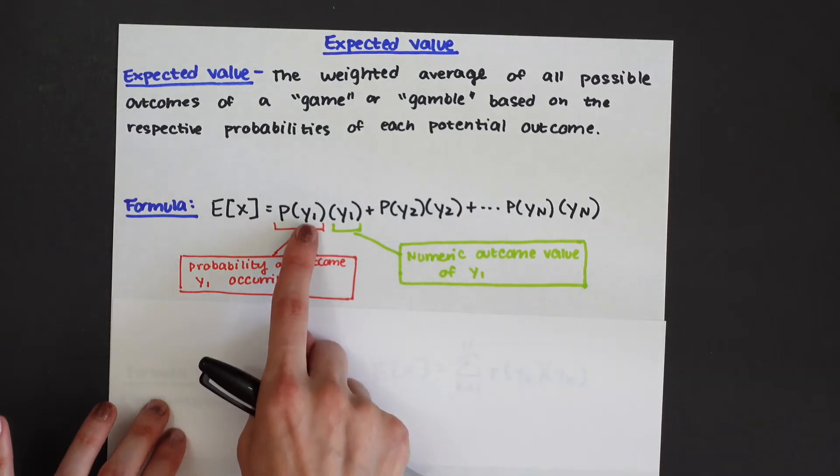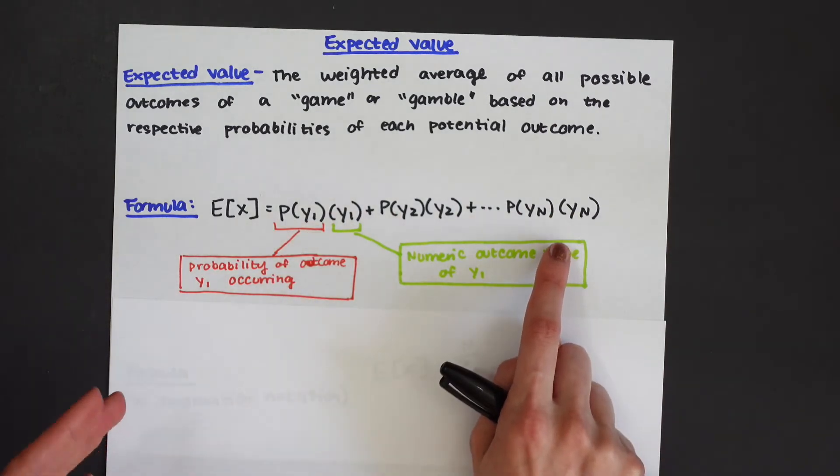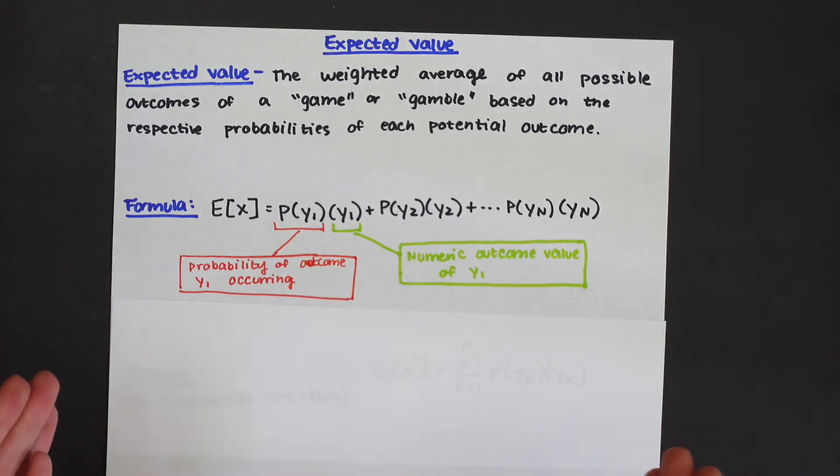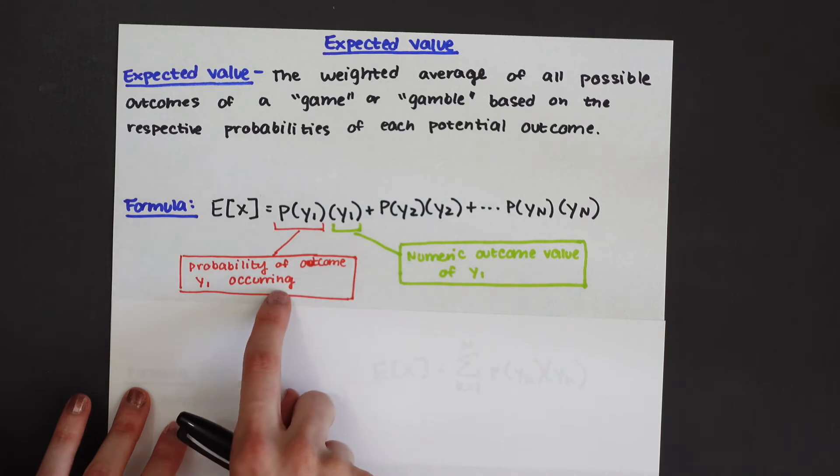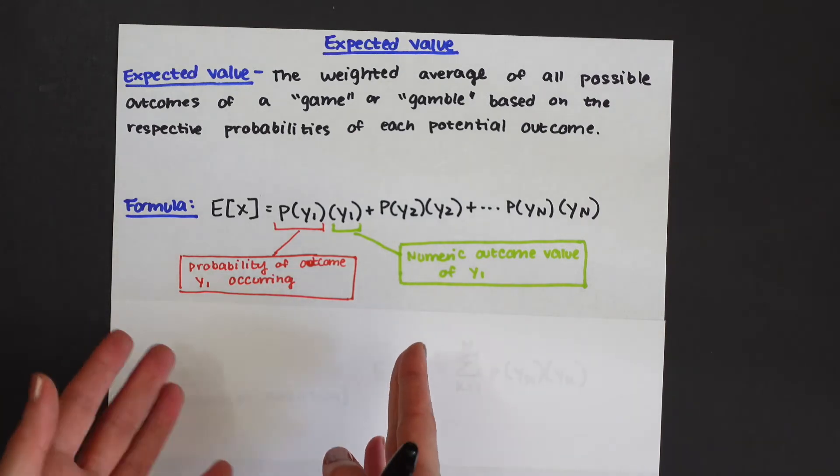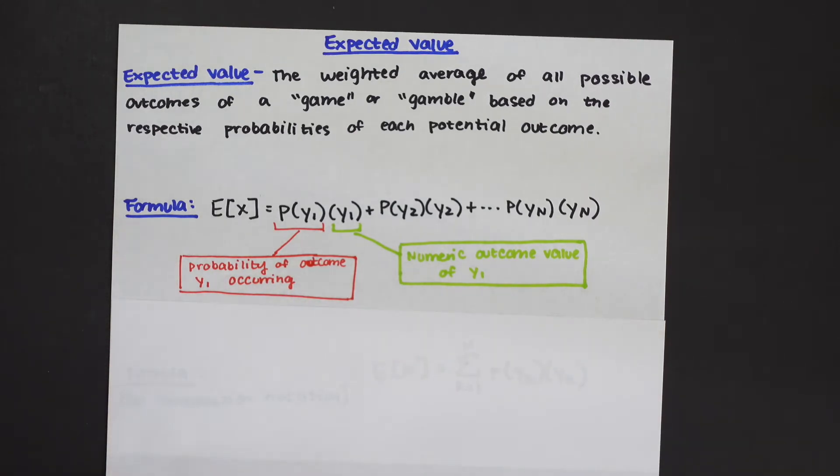What we're saying is by going from one all the way to n is that for however many possibilities of outcomes we're just going to be adding them together. Adding the numeric value times the probability of that particular outcome and adding however many possible outcomes there are. Since we're adding we can actually write this in summation notation as well.